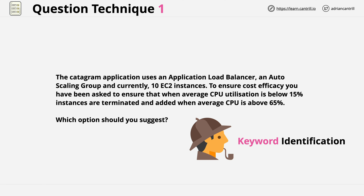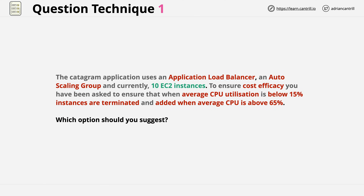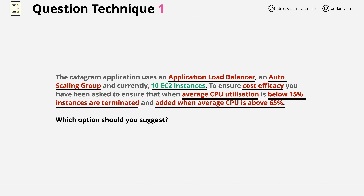If you want to, pause the video at this point and have an attempt at identifying which words from this question you think might be useful when it comes to selecting an answer. Go ahead and pause now, and when you've done you can resume and we'll look at it together. Now whether you've attempted this yourself or not, let's take a look at which keywords I identified. I've highlighted in red the main points of the question which jump out to me, and in green one special point I wanted to draw your attention to. For anyone with colour vision deficiency, I've also underlined them to make them easier to identify.